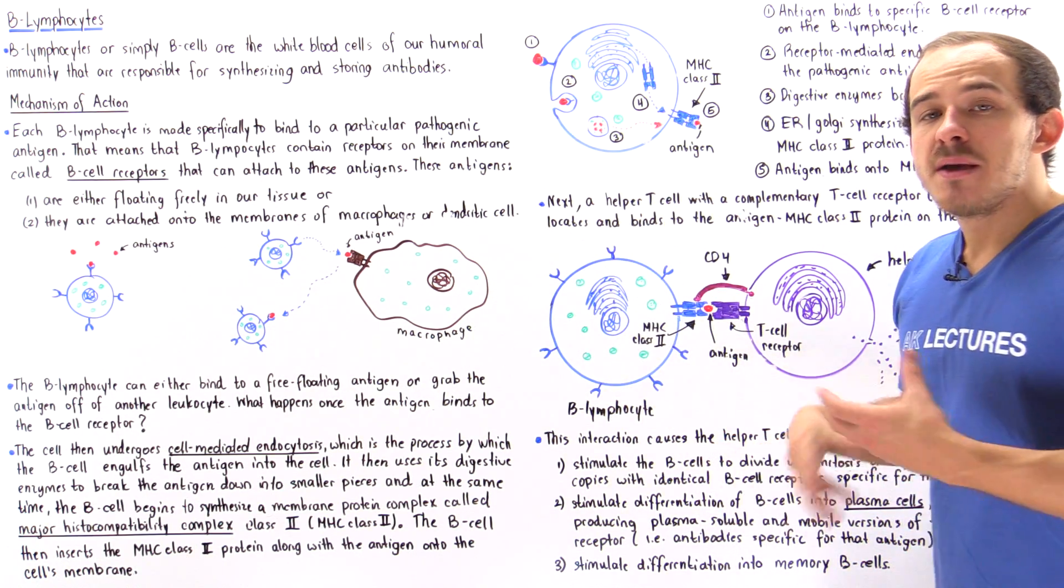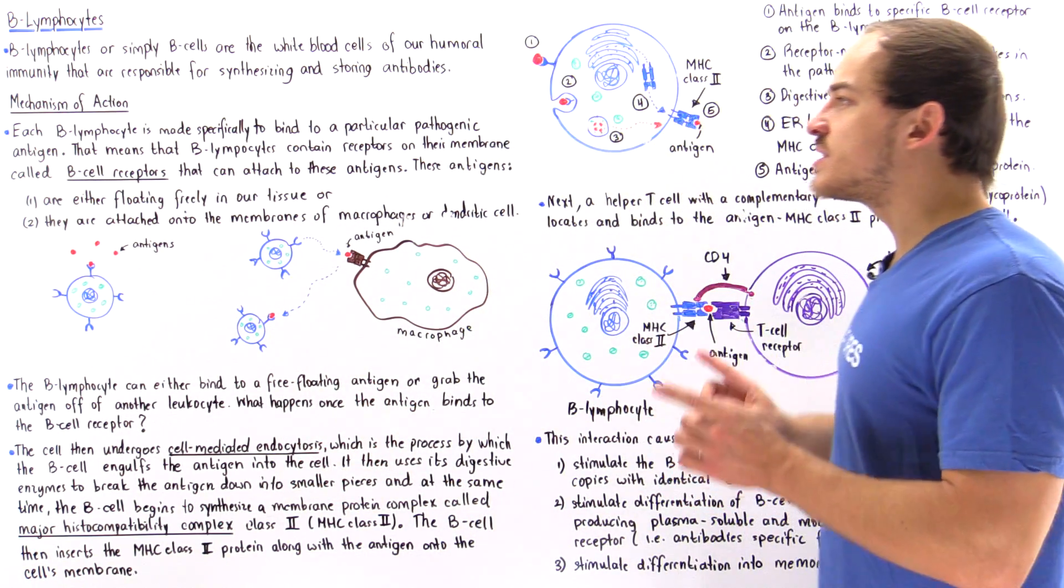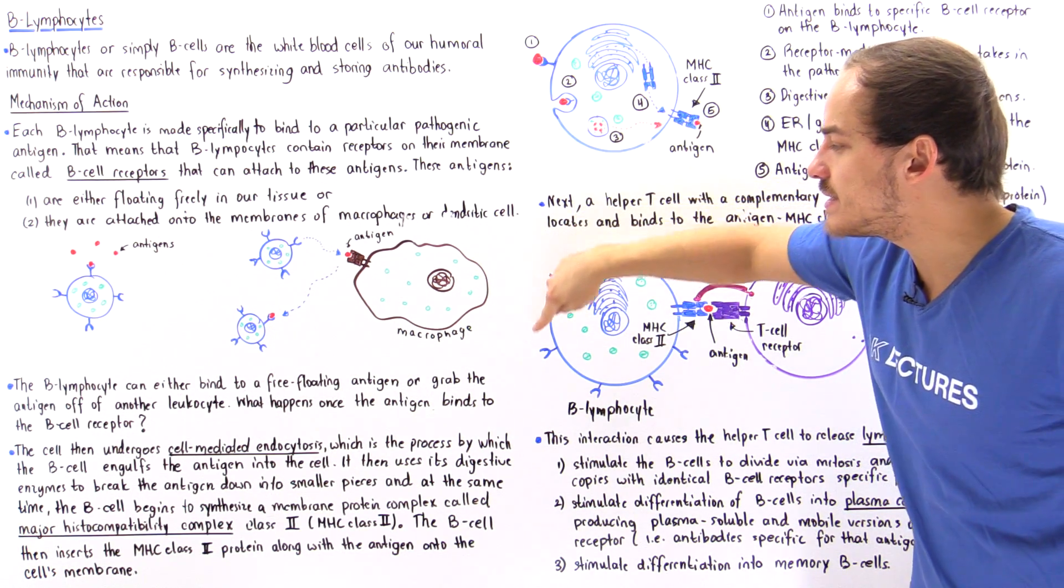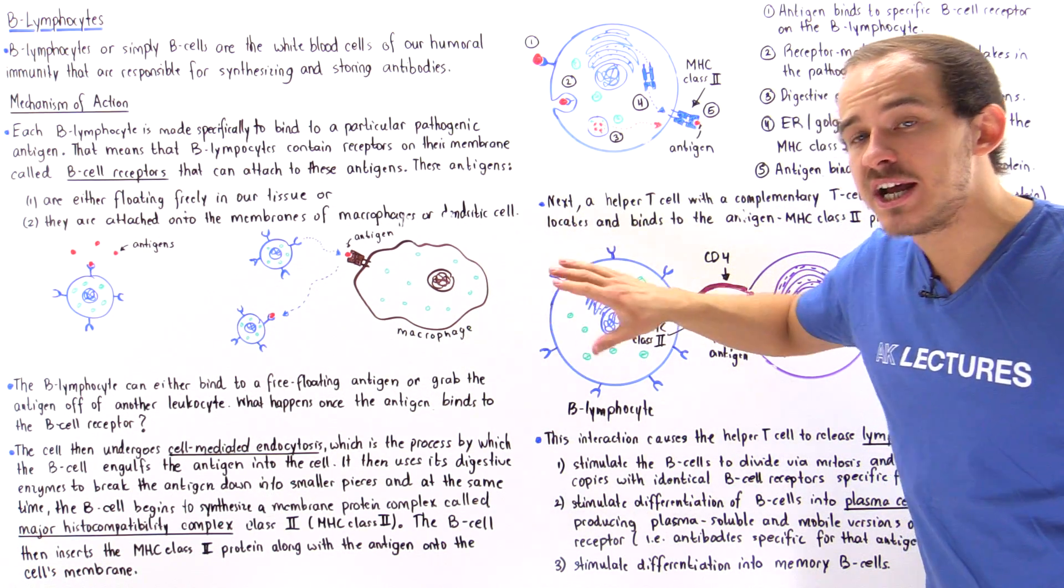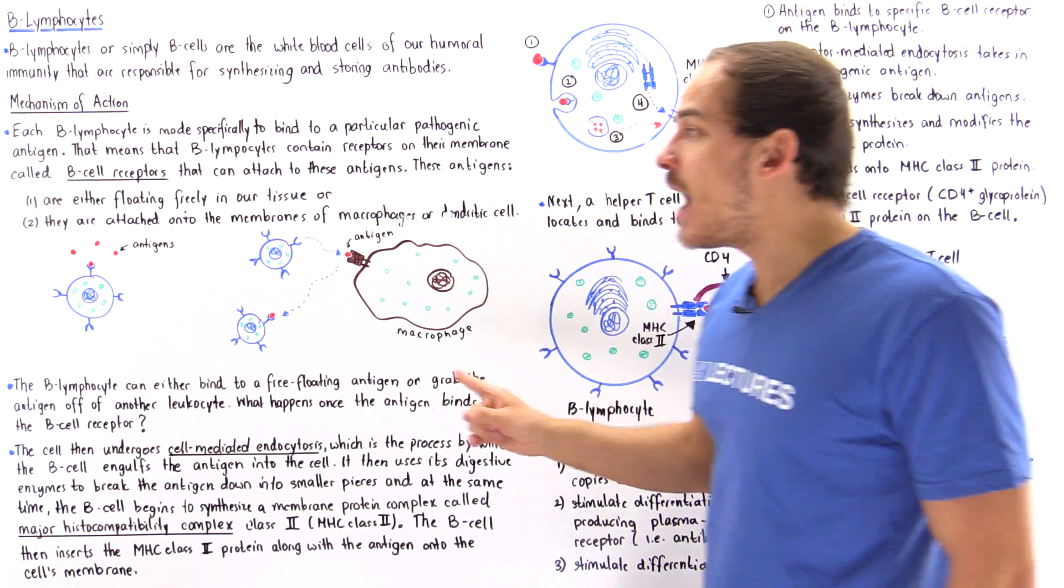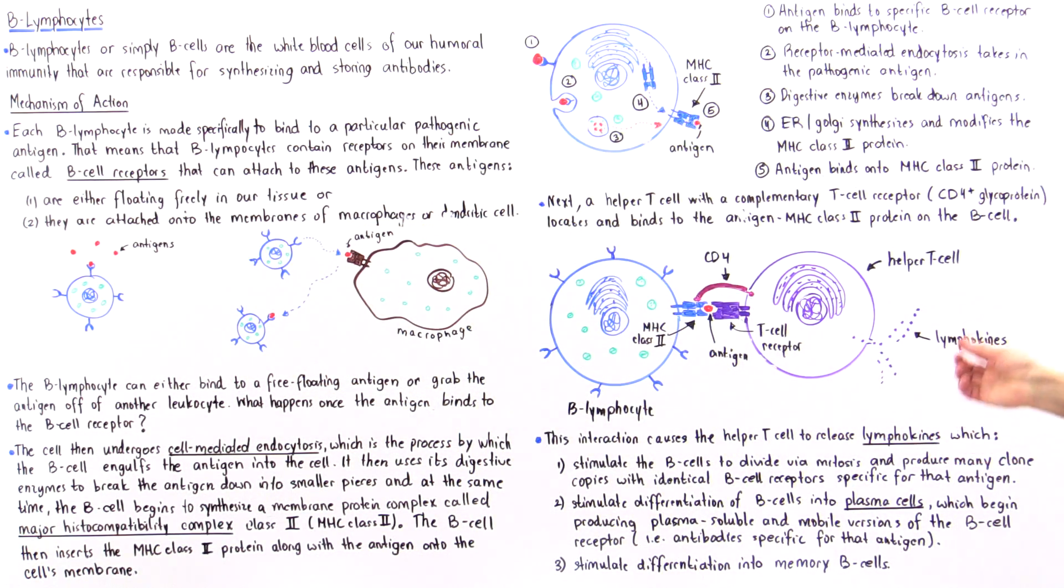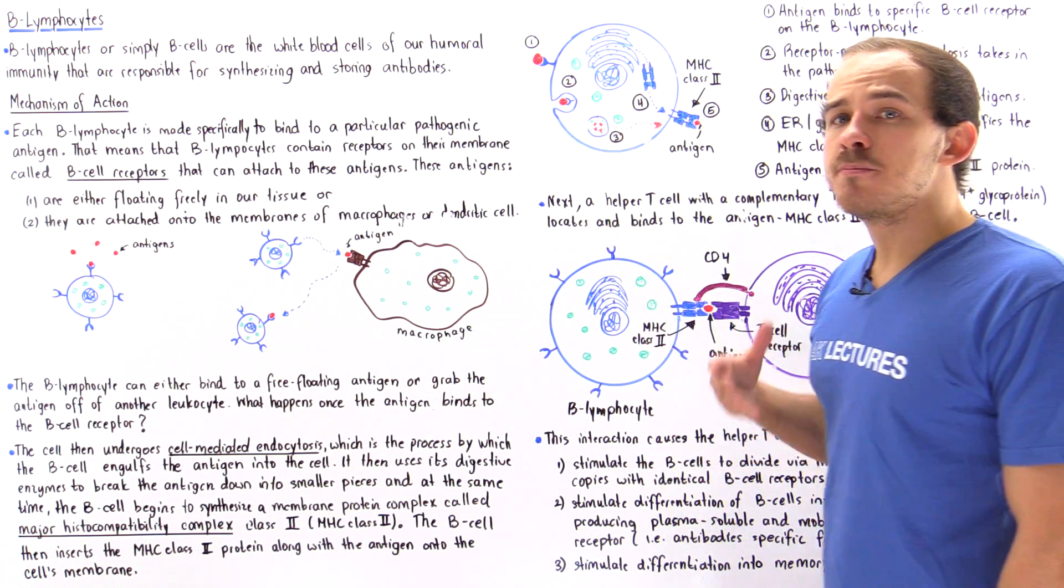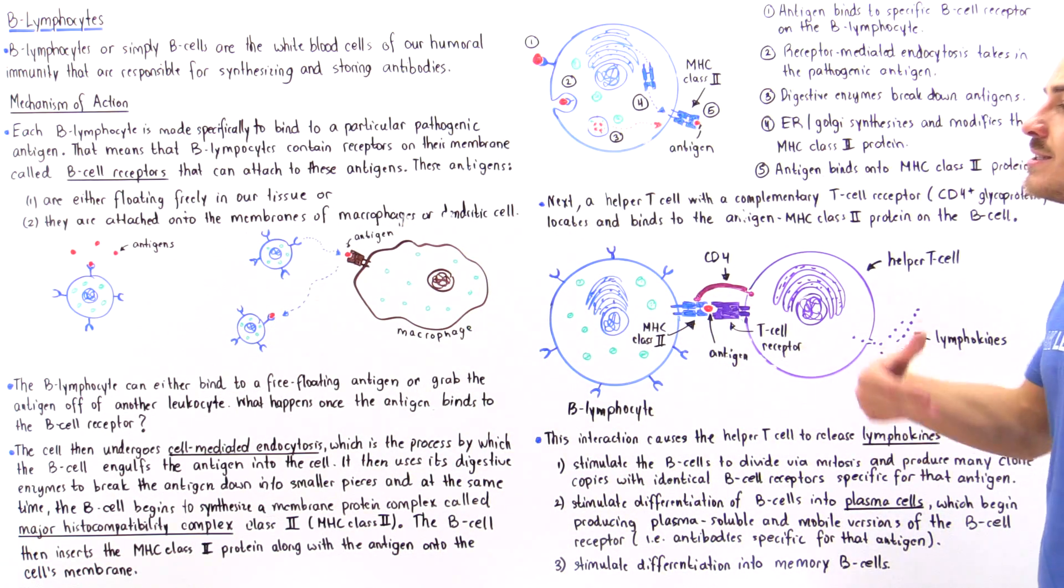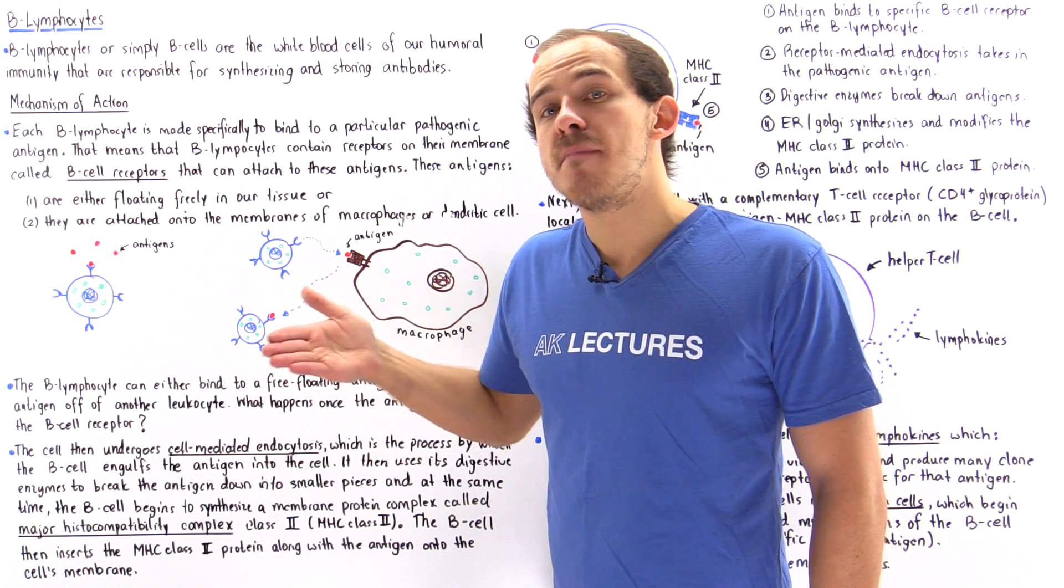The B cell begins to clone itself, producing identical B cells that contain the same B cell receptor. These cloned cells can find the same antigens floating in our body. This also induces differentiation: some cloned B cells differentiate into plasma cells and memory B cells.